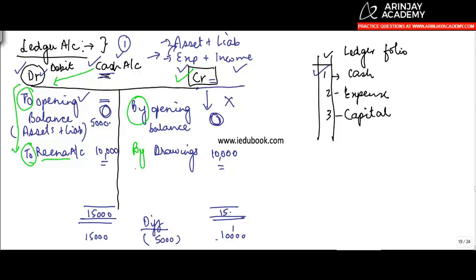So if this is 15,000, this has to be 15,000, and you put in a difference of 5,000. And you write it here as 'By Balance Carried Forward'. So just like this balance was brought forward, you carry forward this balance which will go and sit in the next year's account. So this T-shaped account is called a ledger.